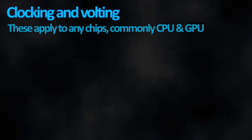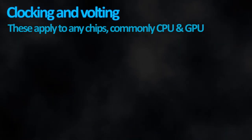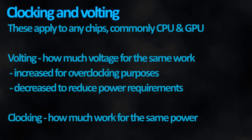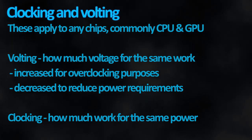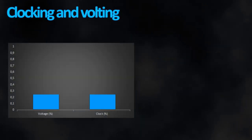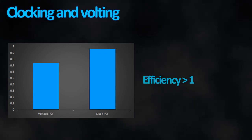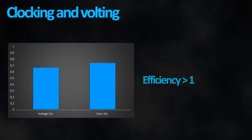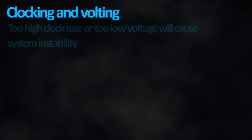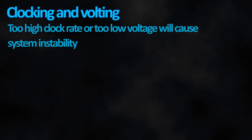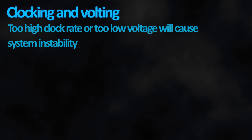Finally, we have the concepts of under- and overvolting and under- and overclocking. To put it simply, the volting part is how much you're feeding your chip and the clocking part is how much work you're letting it do. Meaning: if you keep the voltage the same but increase the clock frequency, that chip becomes more efficient. The same would apply if you keep the clock frequency the same but reduce the voltage. However, if you give it too much work or don't feed it enough, it will starve and crash — kind of like the Russian economy.